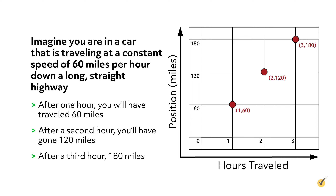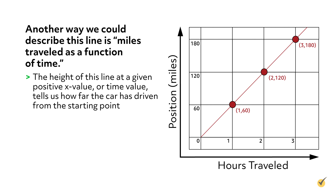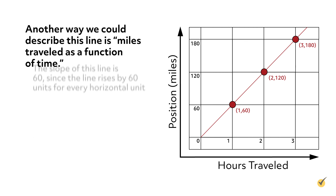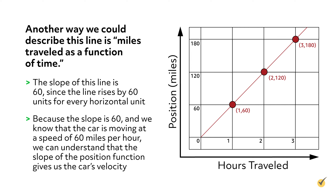Imagine you're in a car that's traveling at a constant speed of 60 miles per hour down a long straight highway. After one hour you will have traveled 60 miles. After a second hour you'll have gone 120 miles. After a third hour, 180 miles, and so on. We can get an idea of this movement graphically by plotting miles against hours, then connect the dots to make a line. Another way we could describe this line is miles traveled as a function of time. The height of this line at a given time value tells us how far the car has driven from the starting point. This is why such a line is often referred to as a position function.